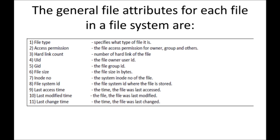User ID — this is the file owner's user ID. It tells who is the owner of the file, and that detail will be stored in this attribute. GID means the file group ID. As a user, you can be assigned to different groups in Unix, and for each group there will be a separate ID. UID gives the user ID, and GID gives the group ID of that particular user.